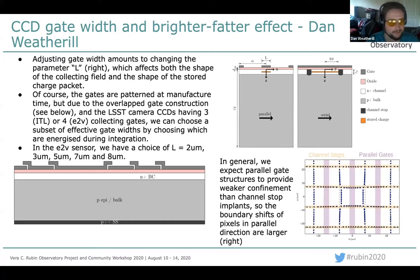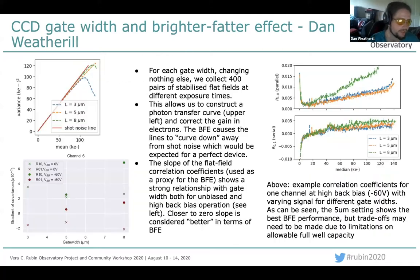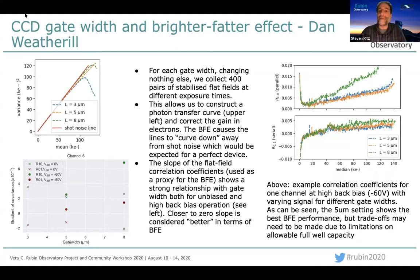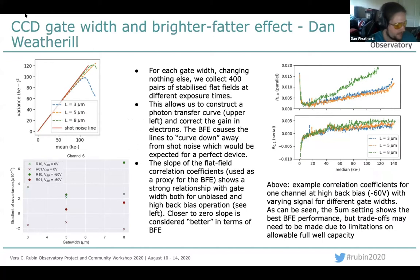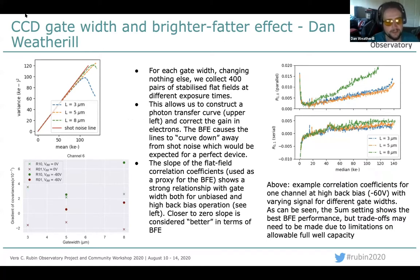We present results from testing done this year in the OPMD lab at Oxford. What we find is that you can reduce the slope of the brighter-fatter effect coefficient by a fairly substantial margin by choosing the gate width accurately. We find that five microns for E2V seems to work best. We can't tell you exactly why, but it's certainly a big change, so it's worth looking into.